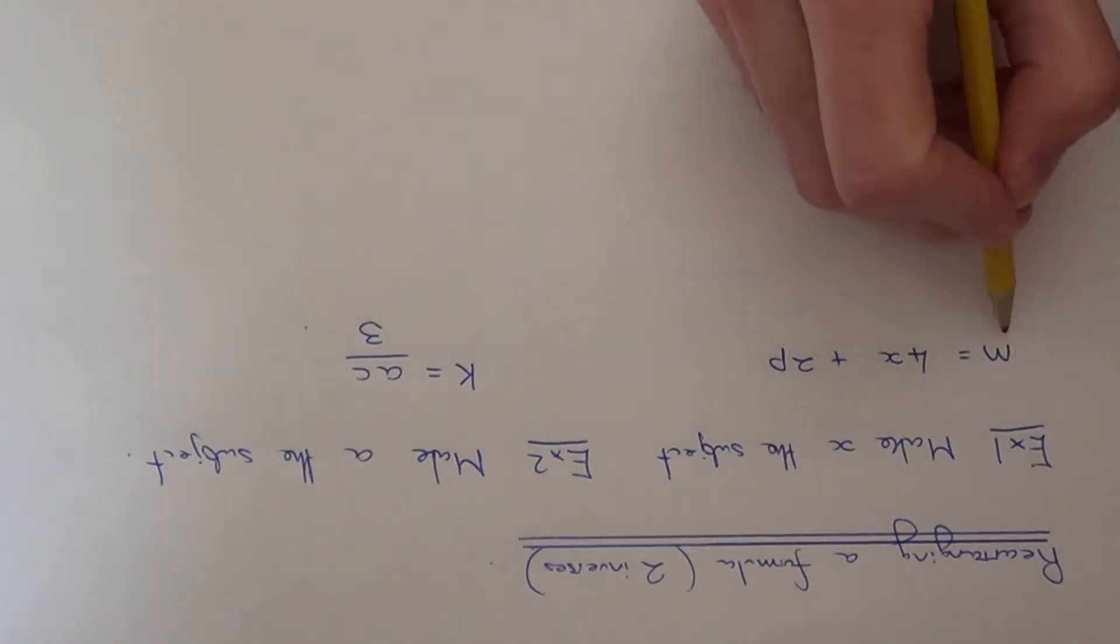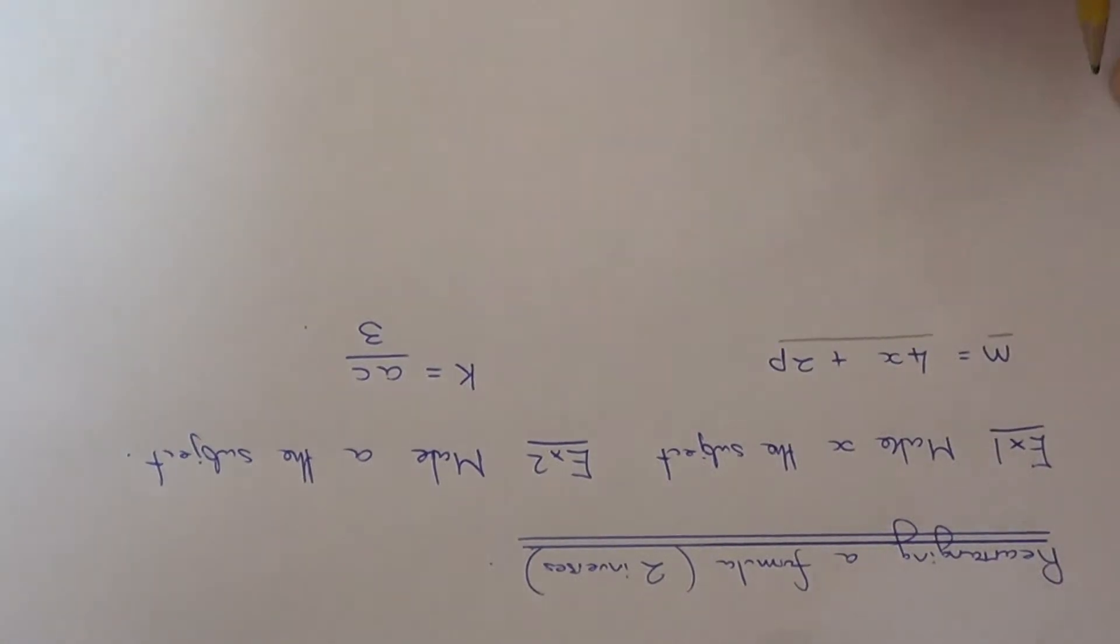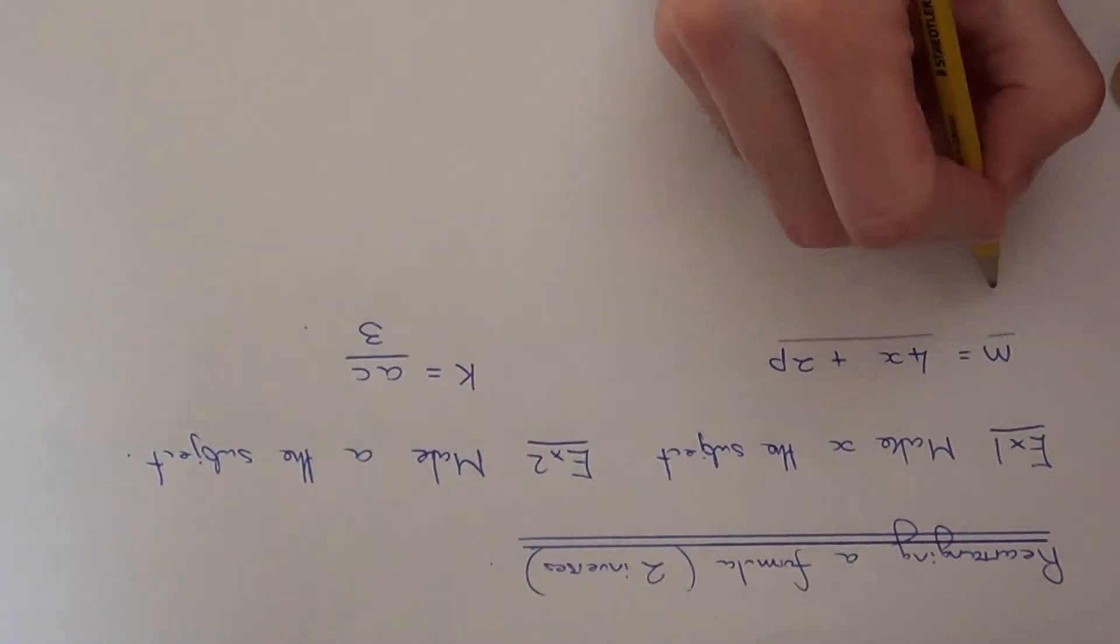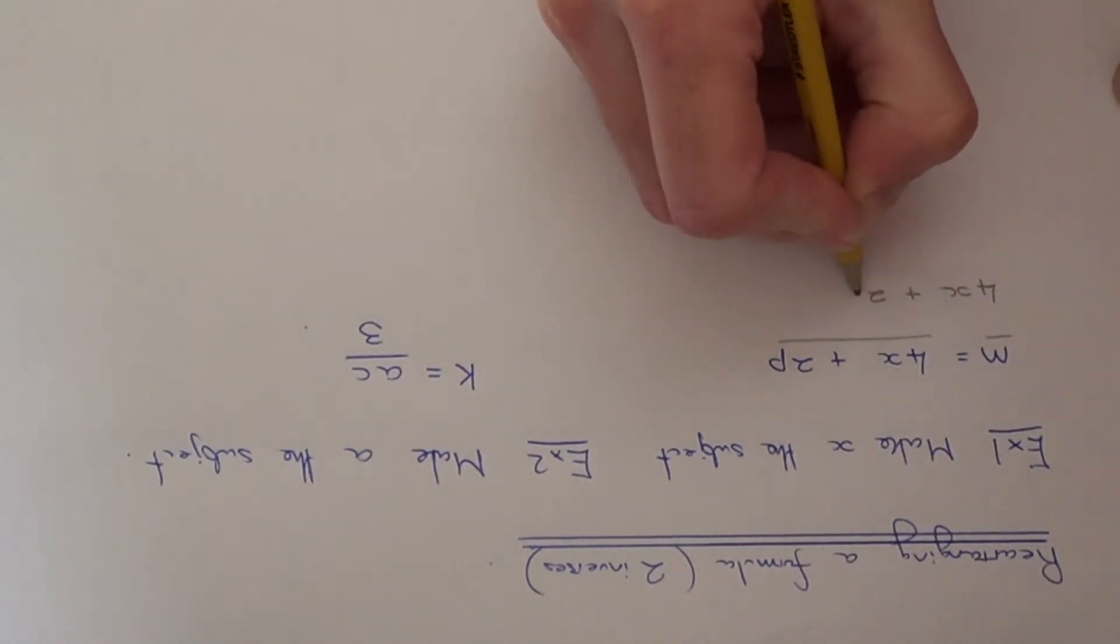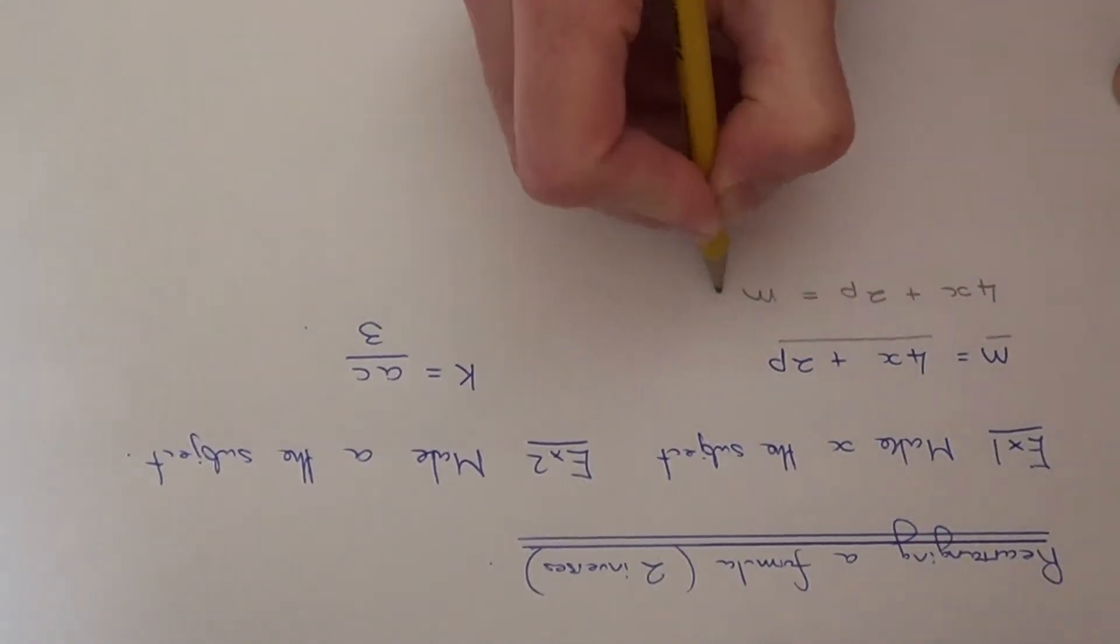First of all, what we need to do is swap the left hand side and the right hand side of the formula over. This makes things easier to do so we're moving things to the right hand side of the formula. On our first line rewrite it as 4x plus 2p equals m.